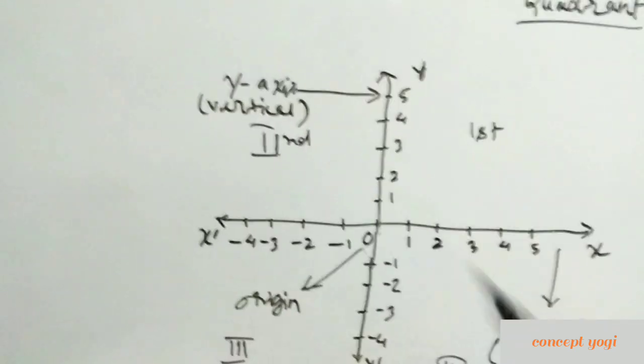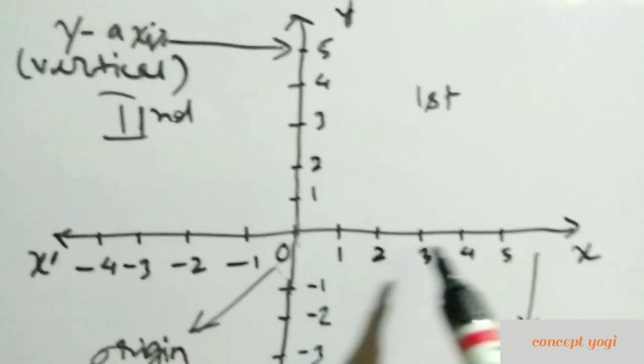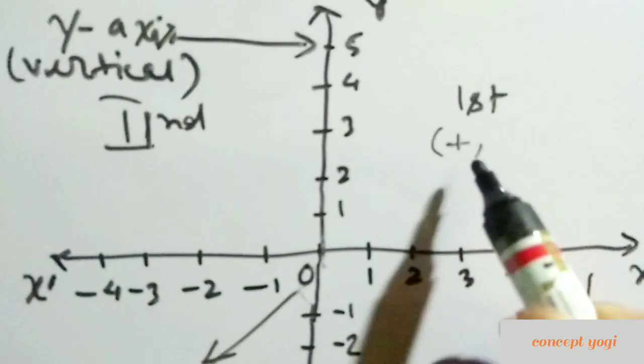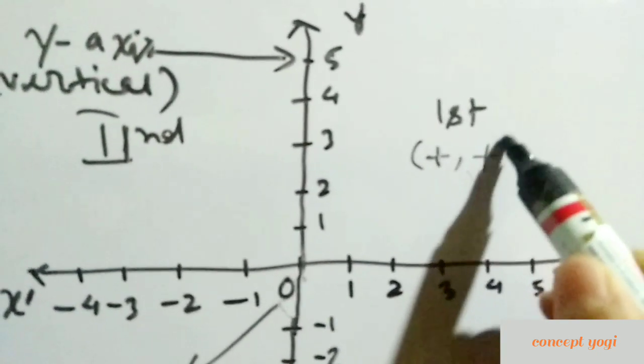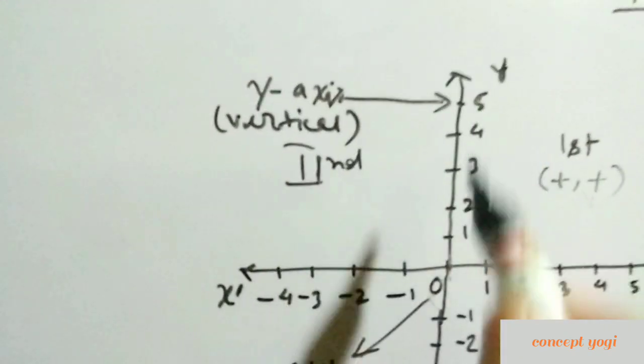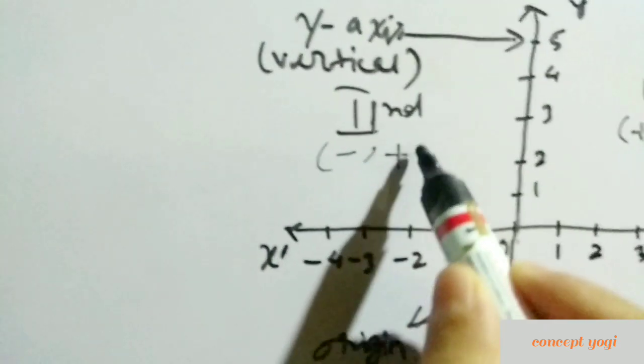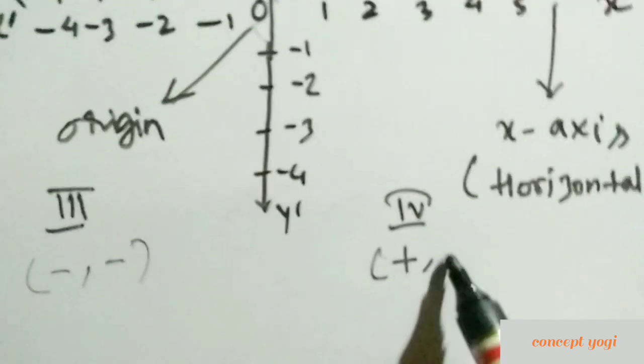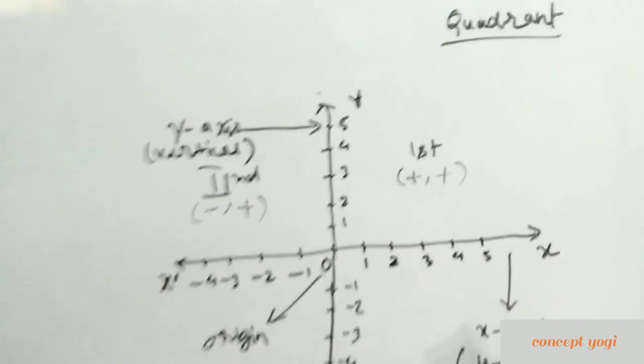Each part is called a quadrant — first, second, third, and fourth. In the first quadrant, x-axis values are positive and y-axis values are positive, so both x and y are plus. In the second quadrant, x is minus and y is plus. In the third quadrant, x is minus and y is also minus. In the fourth quadrant, x is plus and y is minus. This plane is called the Cartesian plane.